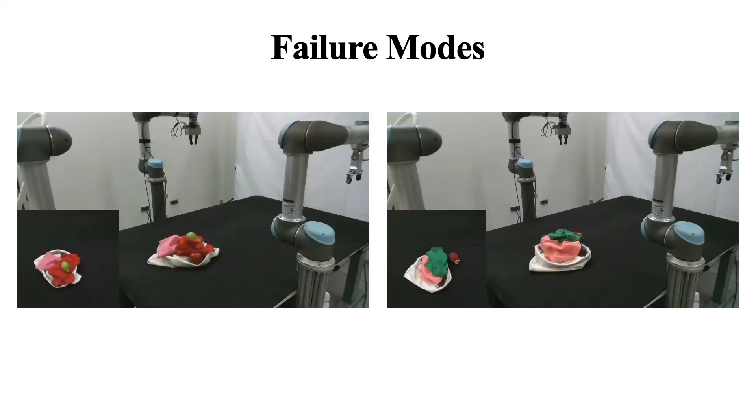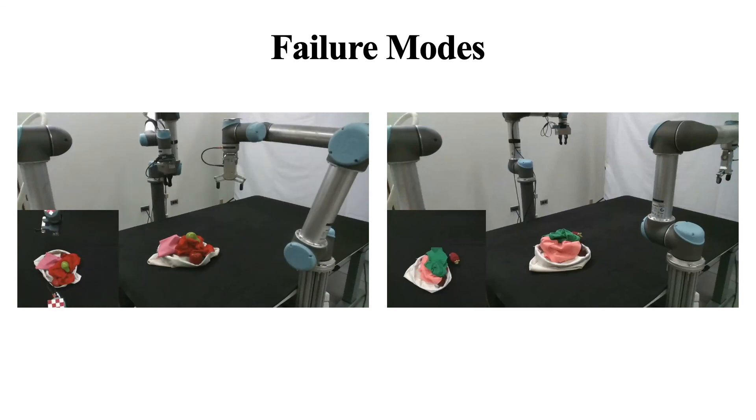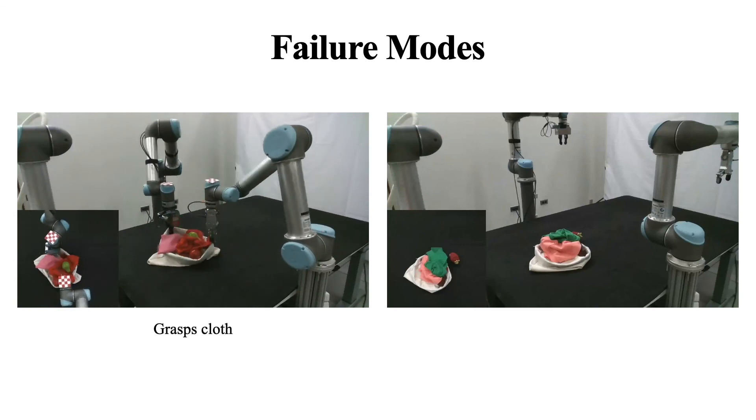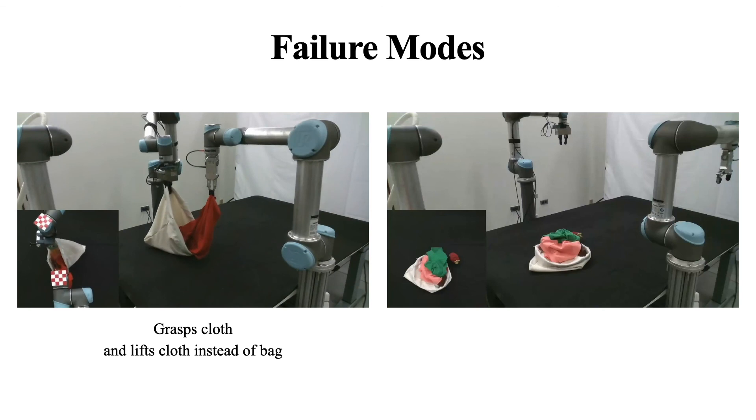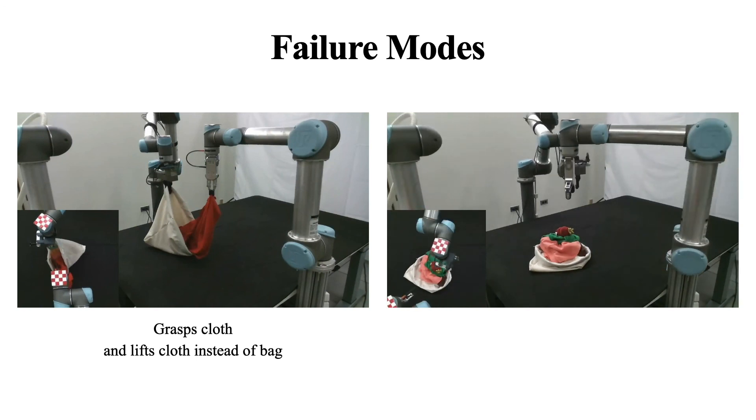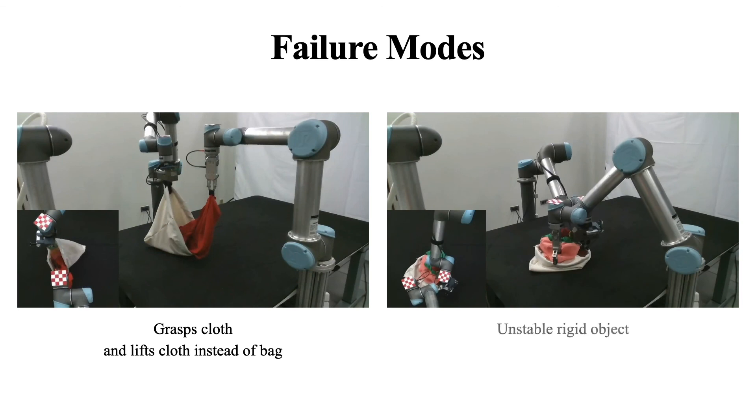In terms of failure modes, the most common case we observed was during bag grasping. For instance, the robot would inadvertently grasp a cloth close to one of the predicted lift points and lift the cloth instead of the bag. Another observed failure mode is suboptimal object rearrangement. For instance, a rigid object placed upon a pile of cloths is generally unstable and is more likely to roll away during lift.